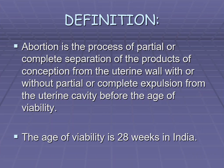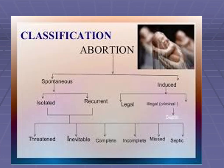The age of viability is 28 weeks in India. The classification of abortion has mainly two types: spontaneous and induced. Spontaneous means naturally, and induced means the couple has forcefully gone for the abortion. Under spontaneous, there are two types: isolated, which occurs one time, and recurrent, which is a history of two, three, or more abortions.